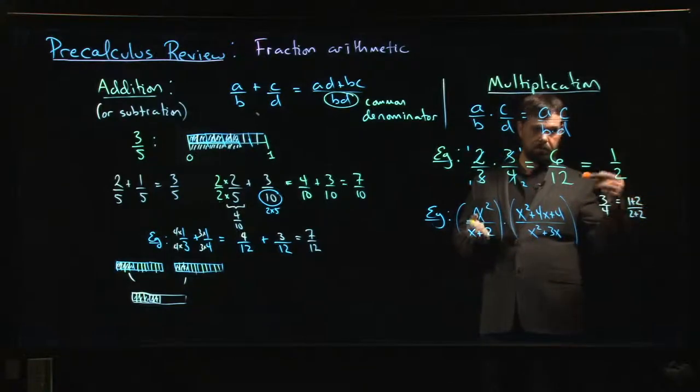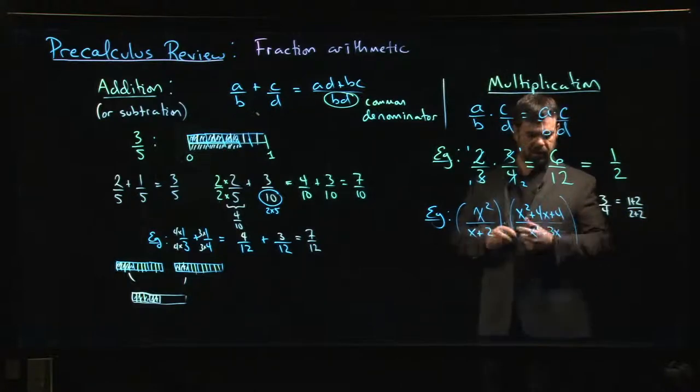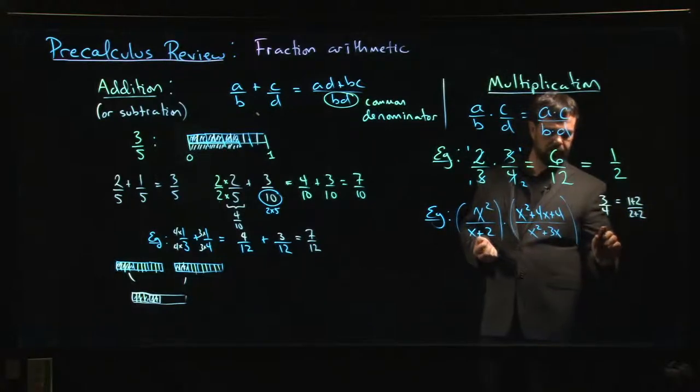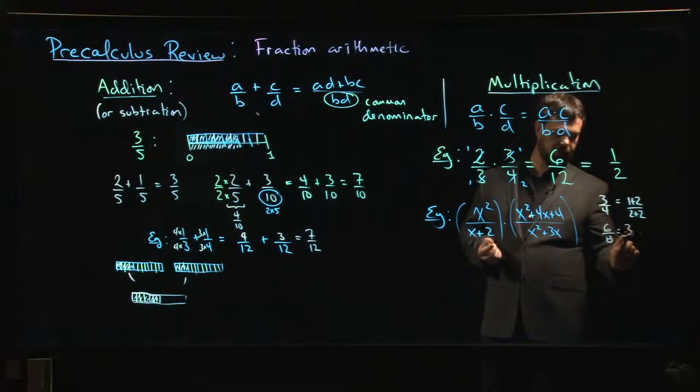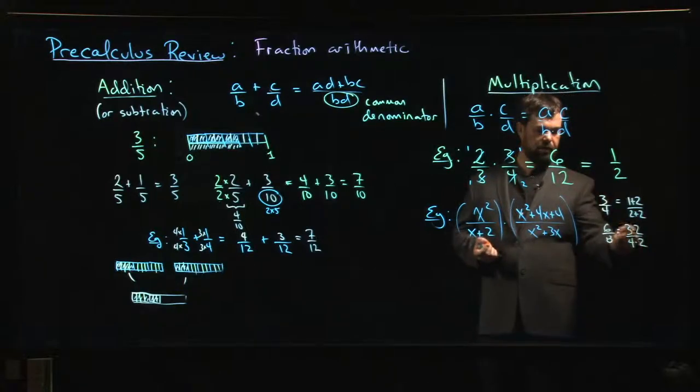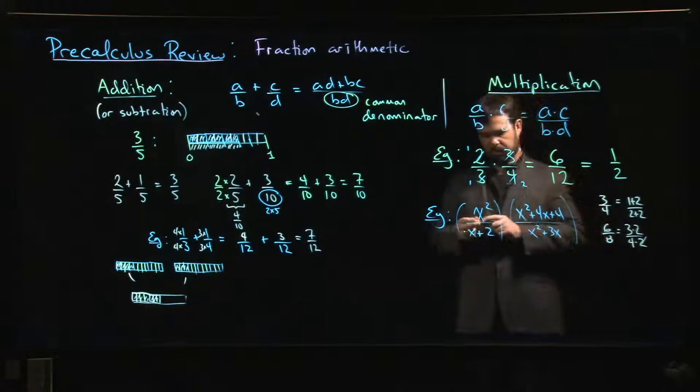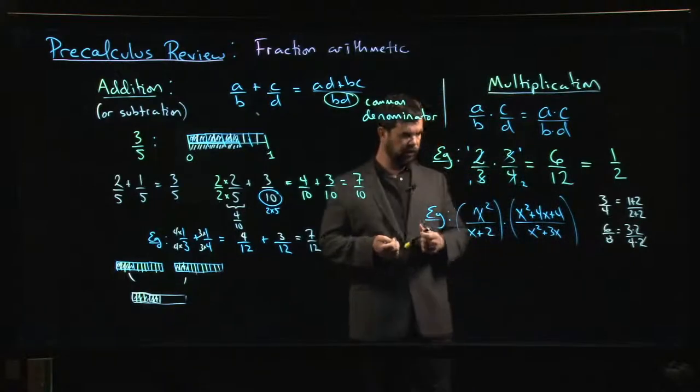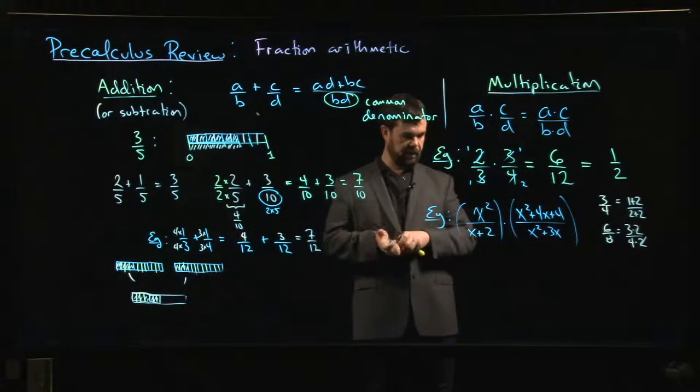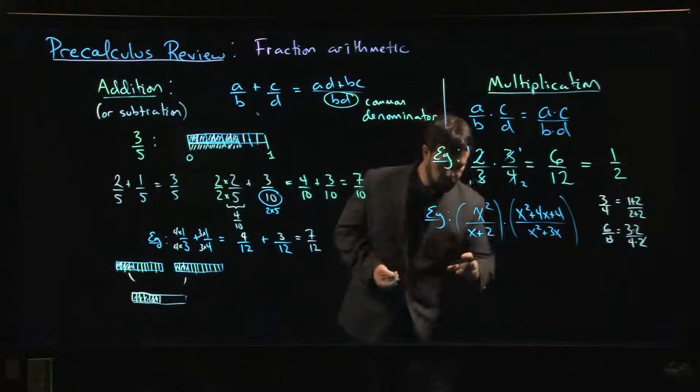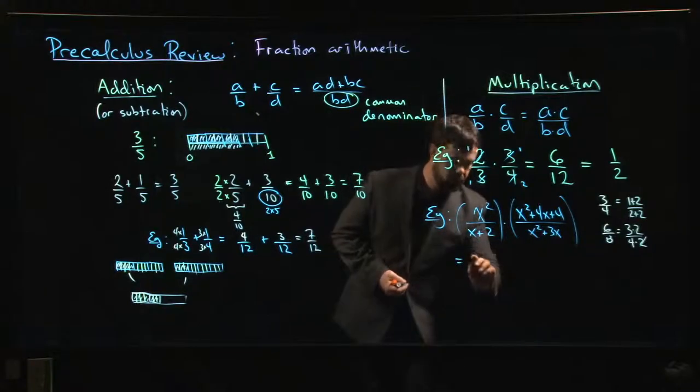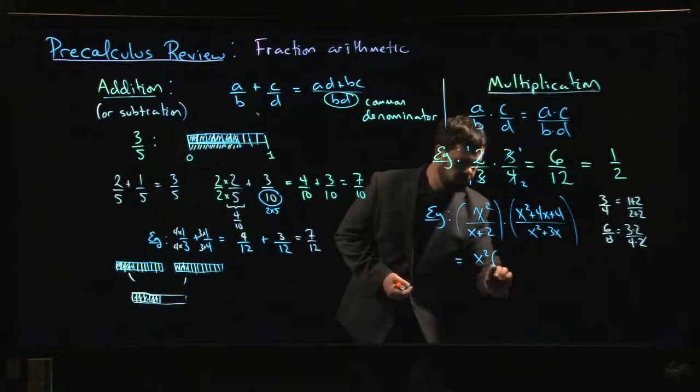On the other hand, if I had something like six eighths and I said that's three times two over four times two, okay, now that two - if it's being multiplied, same thing top and bottom is multiplying, then I can cancel. So what I have to do in something like this is first factor.